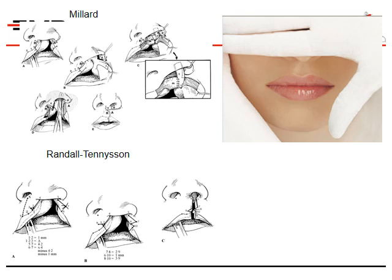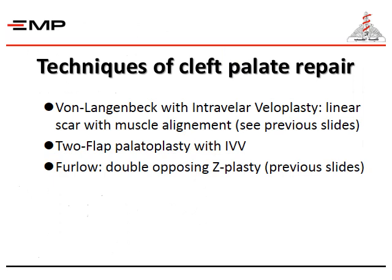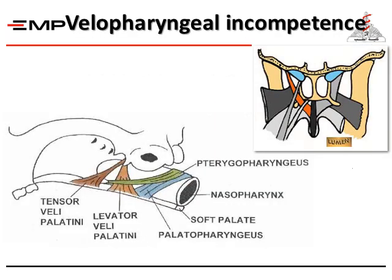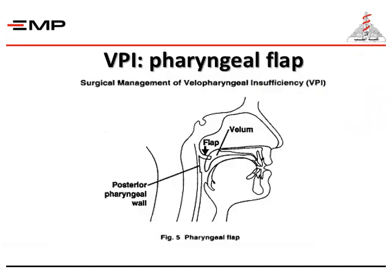We use Millard and Tennyson techniques for restoration and repair of cleft lip. For cleft palate repair, we have Van Langenbeck with intravelar veloplasty with linear closure and muscle alignment, two-flap palatoplasty, and Furlow double opposing Z-plasty. For secondary deformities with velopharyngeal incompetence, we perform sphincter pharyngoplasty or a pharyngeal flap.